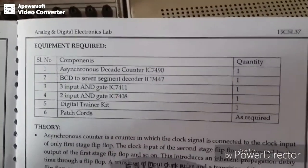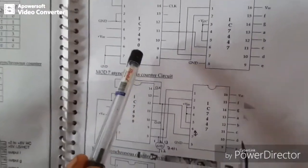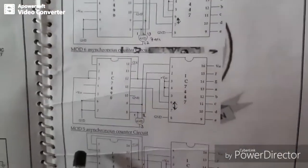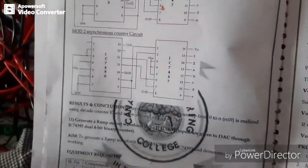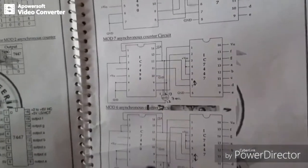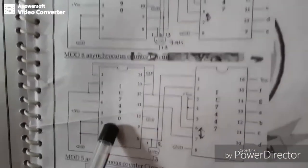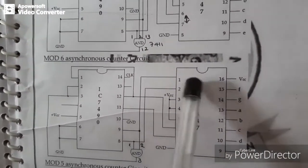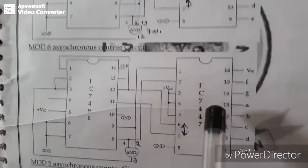So here various circuit implementations are there, for example we have mod 10, mod 7, mod 6, mod 5, mod 4, and mod 2 implementation. First we will see mod 6 implementation using 7490 decade counter and 2 input AND gate and 7 segment display driver 7447.